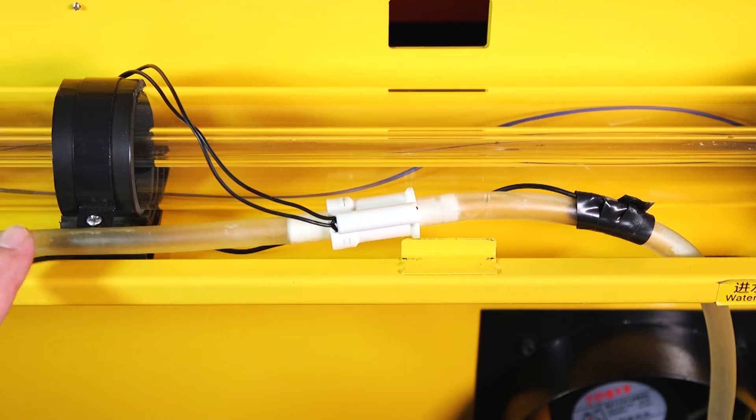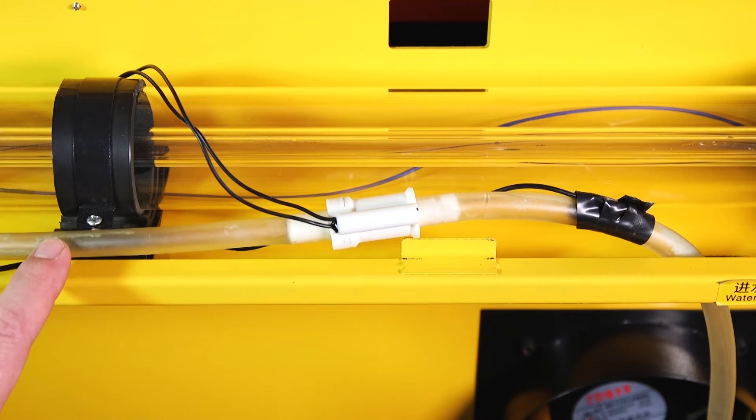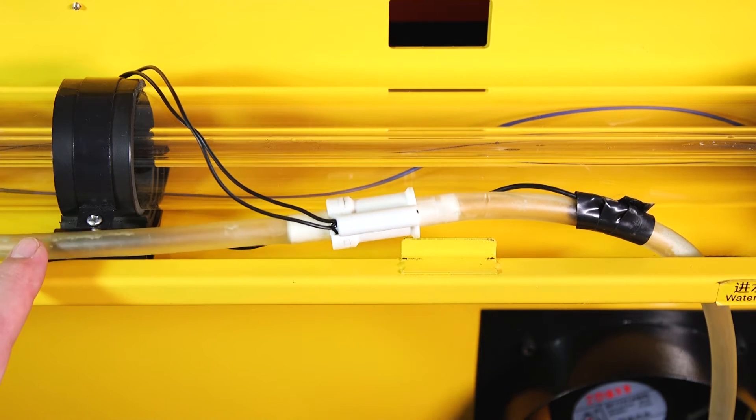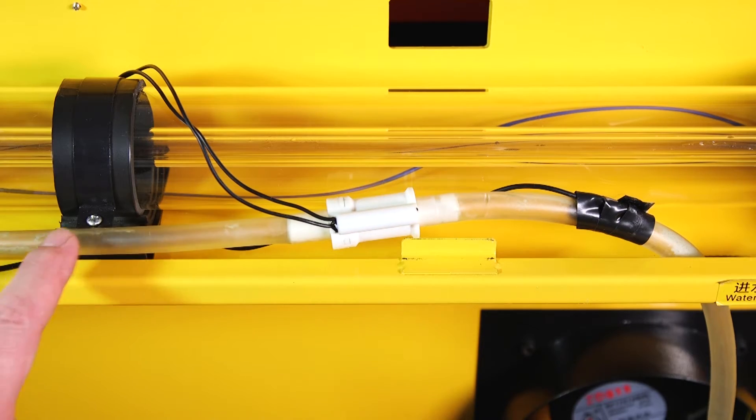As you can see, the hoses on my CO2 laser engraver have a lot of gunk in them. So while I'm replacing the switch, I'm also going to go ahead and replace the hoses as I have a feeling that it's this gunk that has caused my water flow switch to fail.